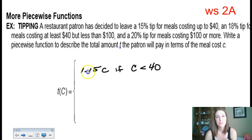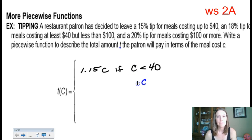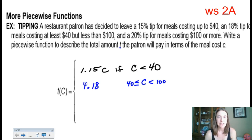For piecewise functions, we separate the function component from the restriction, usually with the word 'if' — sometimes it's a semicolon. The next piece is for meals costing at least $40 but less than $100. So in this case, the cost has to be at least $40 but less than $100 — it's a sandwich setup. It doesn't include $100, but at least $40 is included. So you'd tip 18%, and we'd write that as 118% of the cost.